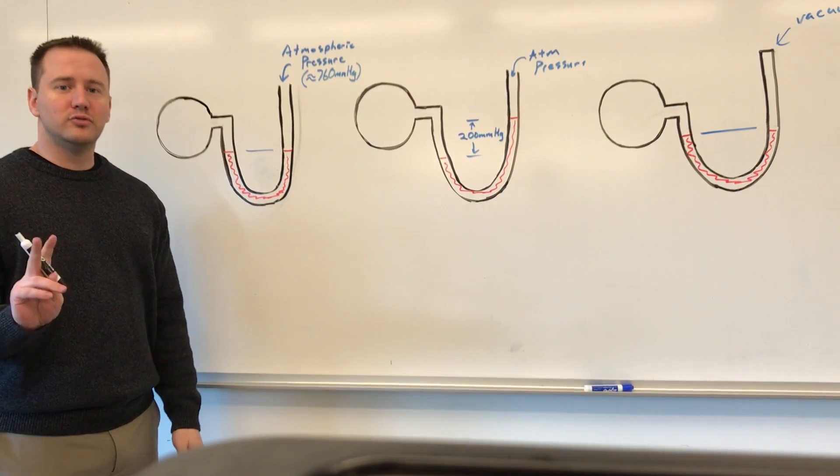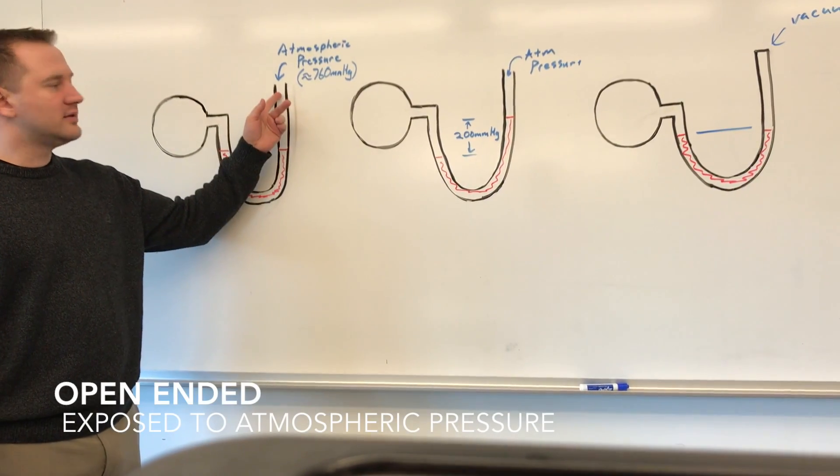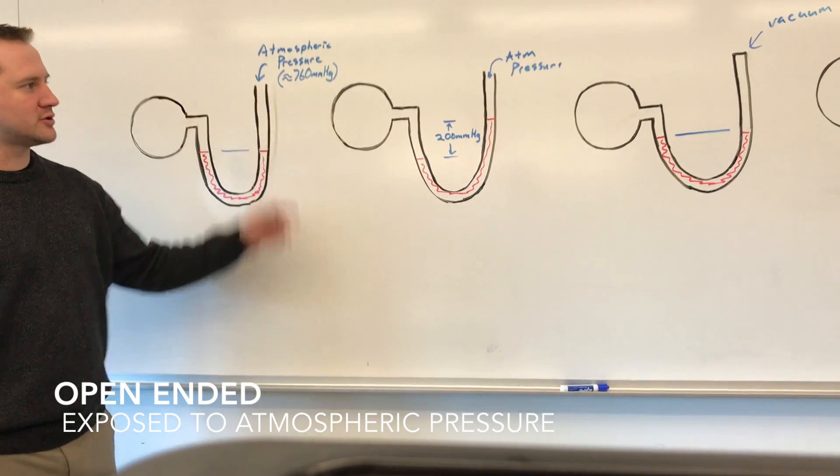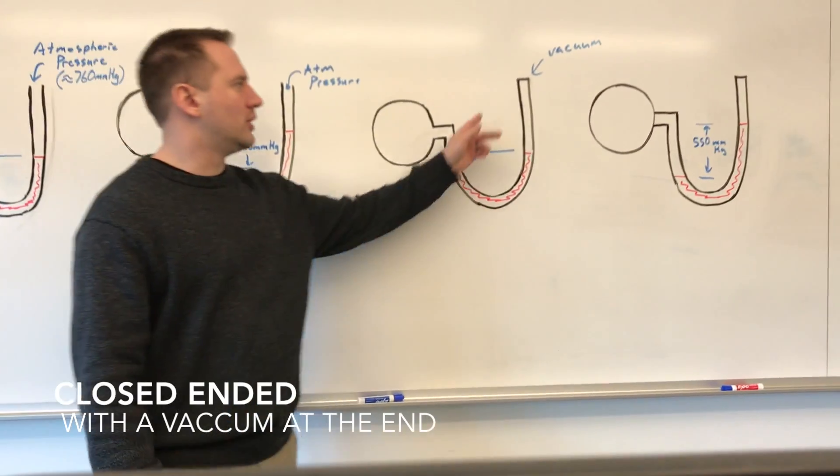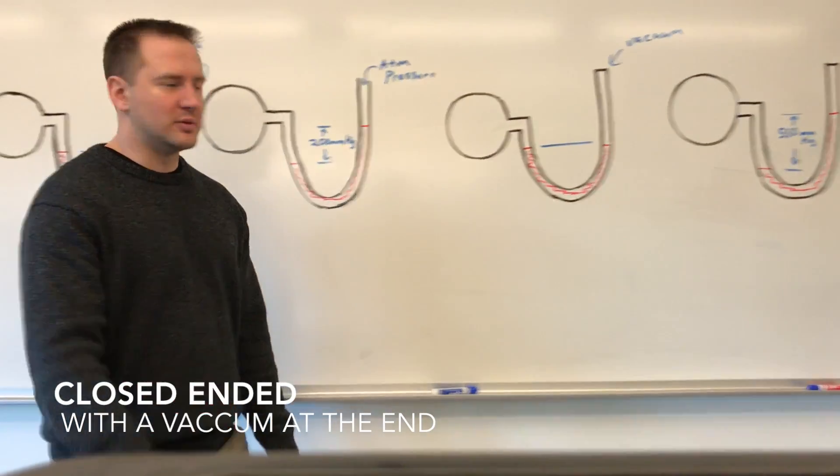When we're looking at manometers, there's two main types. There's ones that are open-ended which are exposed to atmospheric pressure, and we have closed-ended manometers which have a vacuum at the other end.